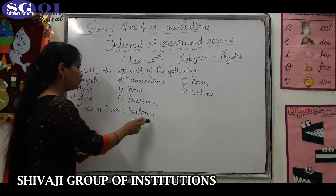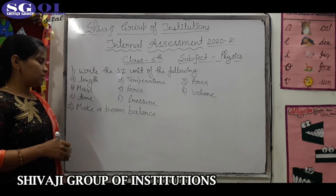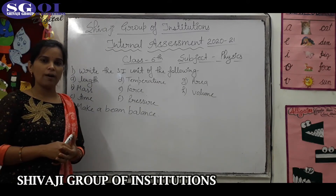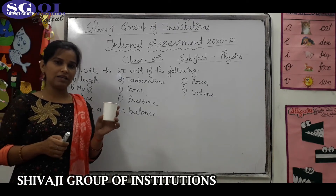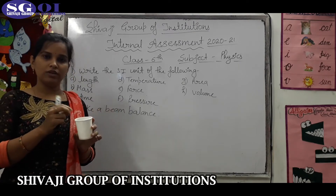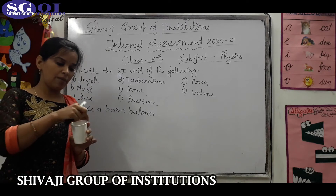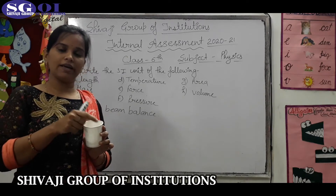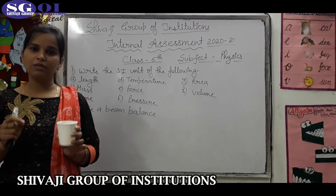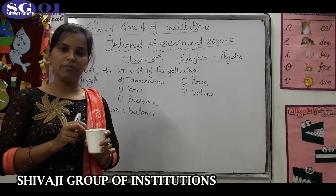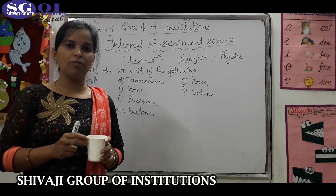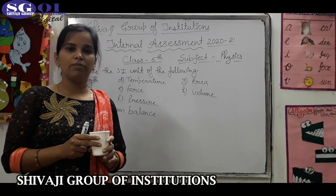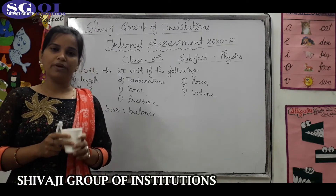The second question is to make a beam balance. This is the project of your interdisciplinary assessment. What you have to do is take a piece of thermocol and bind it with string. You will fold it in 4 places and put string here. In your book, on page number 29, there is a figure of a beam balance. You can also take the help of your elders, and by seeing the diagram on page number 29, make the beam balance.